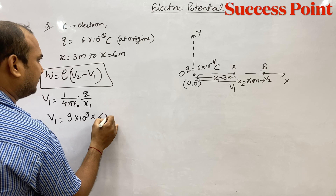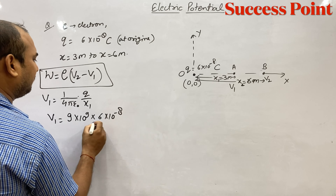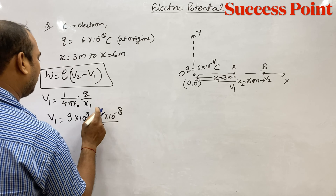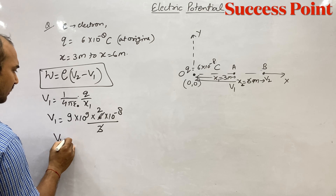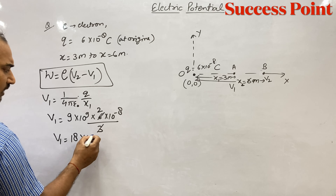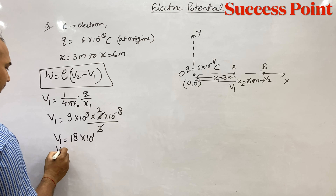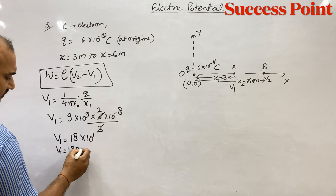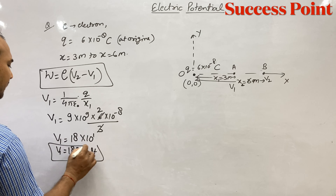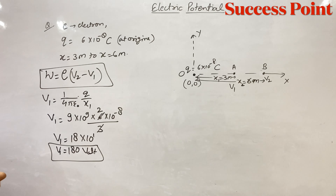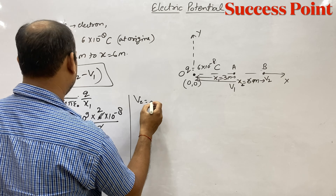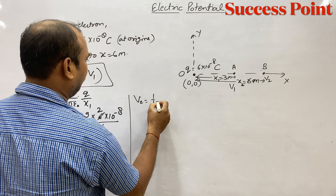V1 = (1/4πε₀) × Q/R1 = 9 into 10⁹ × 6 into 10⁻⁸ upon R1 (which is 3 meters). Solving: V1 = 180 V. Yeh pehle point ka potential aa gaya, A point ka potential aa gaya.